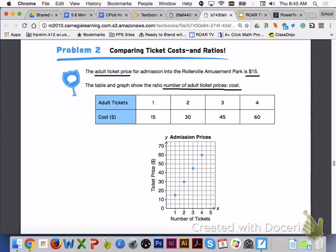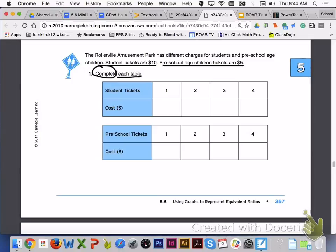Turn to page 357. Problem 2, comparing ticket costs and ratios. The adult ticket price for admission into the Rollerville Amusement Park is $15. The table and graph show the ratio of number of adult ticket prices to cost. The Rollerville Amusement Park has different charges for students and preschool-age children. Student tickets are $10. Preschool-age children tickets are $5. Please answer number 1 with your group members.